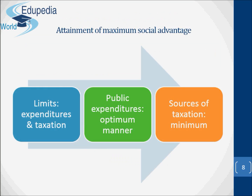Attainment of maximum social advantage requires that both public expenditure and taxation should be carried out up to certain limits and no more. Public expenditure should be utilized among various uses in an optimum manner, and the different sources of taxation should be tapped such that the aggregate sacrifice is minimized.